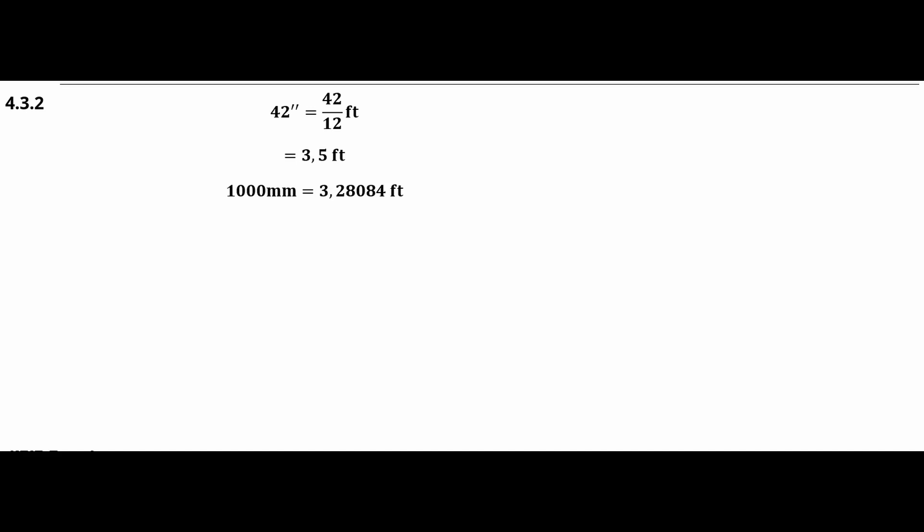From 1,000 millimeters equals 3.28084 feet, if we divide both sides of this equation by 3.28084, then 1 foot is 1,000 millimeters divided by 3.28084 and this gives us a conversion factor of 1 foot equals 304.8 millimeters.